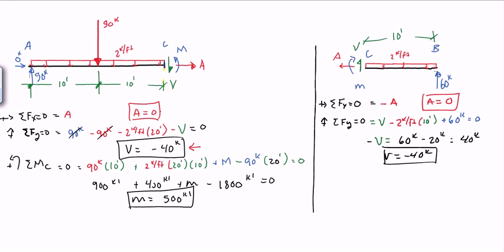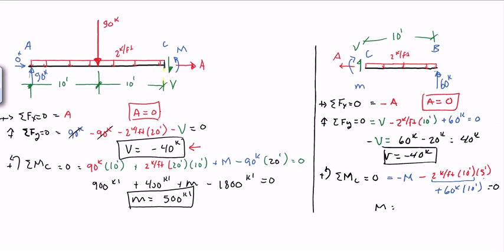Summing moments about point C on the right side, counterclockwise being positive: negative M, minus 2 kips per foot times 10 feet times 5 feet — that's the resultant of the uniform load times the distance to its centroid — plus 60 kips times 10 feet, all equals zero. M equals negative 100 kip-feet plus 600 kip-feet, so M equals 500 kip-feet. The same answer as the left side.